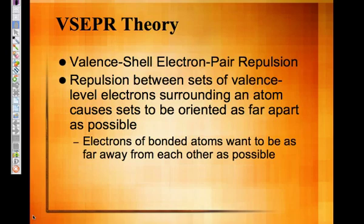First we're going to talk about the VSEPR theory and then we're going to look at intermolecular forces. The VSEPR theory stands for valence shell electron pair repulsion. It has to do with the valence shell electrons because they're all negatively charged — they want to repel each other and be oriented as far apart from each other as possible. The bonds in a molecule will arrange themselves so that they are far away from each other at the largest angles possible between the different bonds.